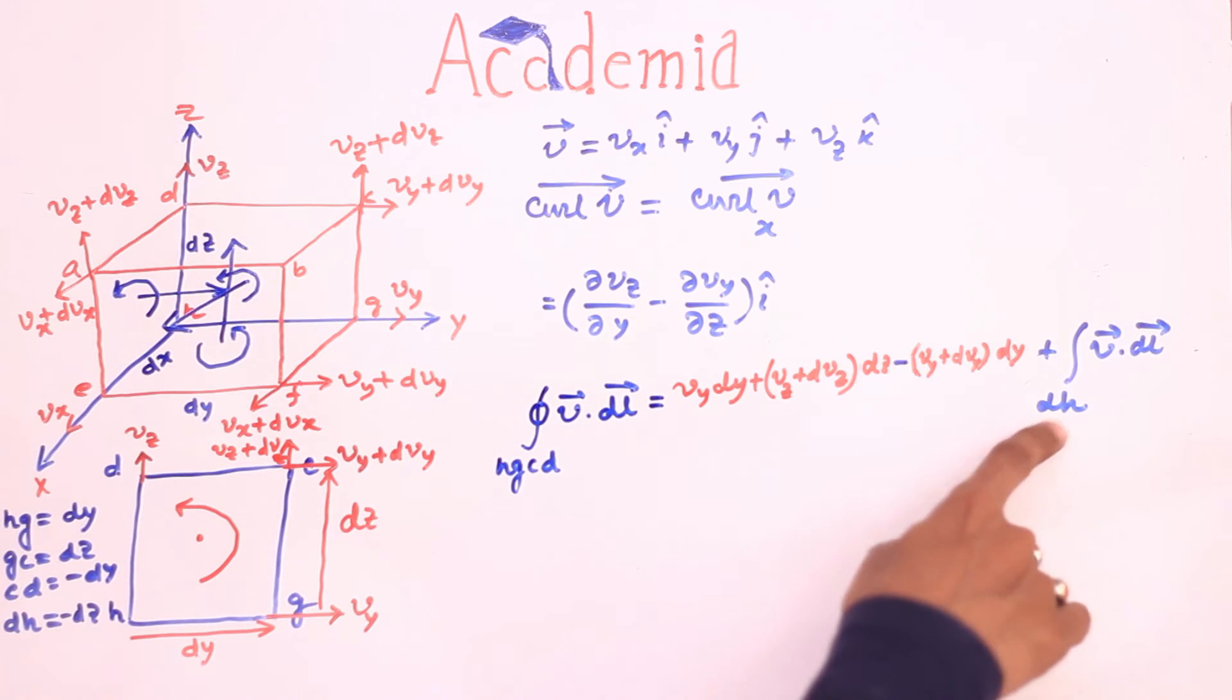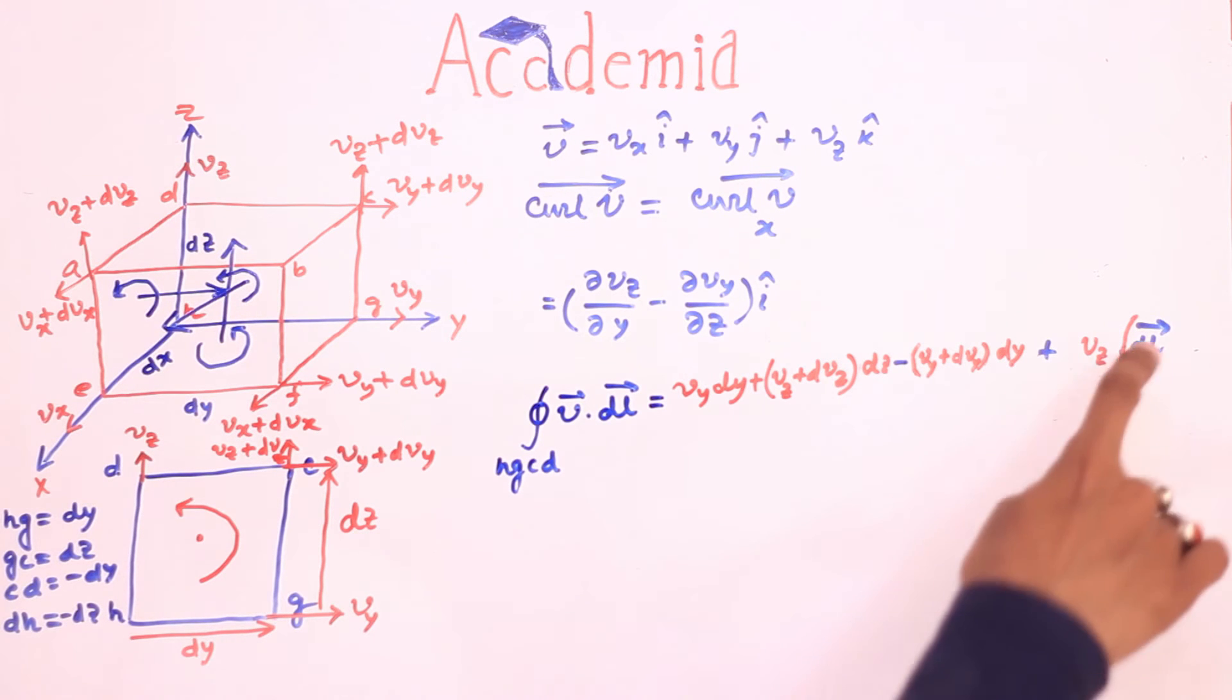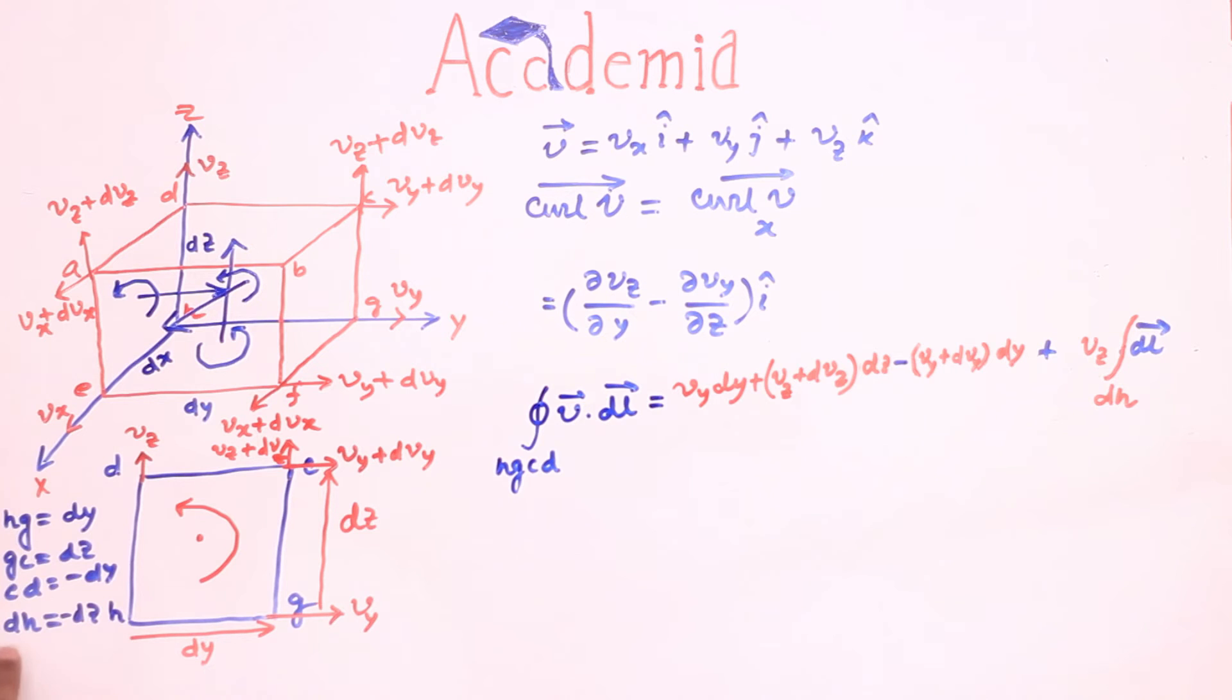Along dh V is vz which is constant and comes out of the integration and integration dl over dh is dh which is negative dz.